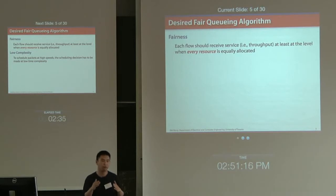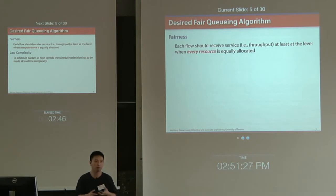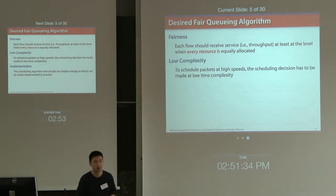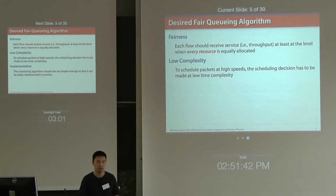For example, suppose you have two flows competing for two middlebox resources — CPU and bandwidth — you have to guarantee that each flow receives at least half the CPU and half the bandwidth. The throughput level should be at least at this level. We also want the scheduling algorithm to have low complexity so that we can make scheduling decisions at high speeds.